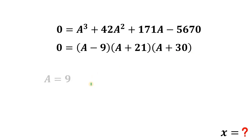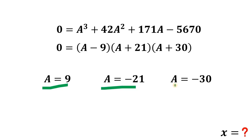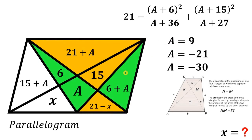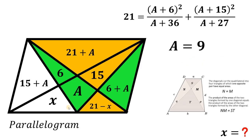This gives three possible values: a equals 9, a equals negative 21, and a equals negative 30. Since a represents an area, it cannot be negative, so a equals negative 21 and a equals negative 30 are eliminated. Therefore a equals 9, meaning the middle region has an area of 9 square units.